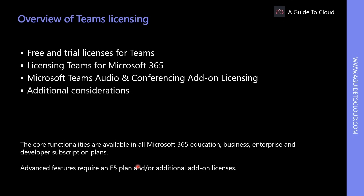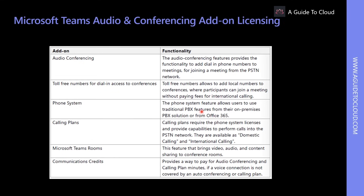Services included in E3 include DLP, Teams naming policy, Teams classification, and Teams creation. E5 licenses are required for information barriers for Teams, audio conferencing, phone system, etc. For audio conferencing, organizations need to buy and assign an audio conferencing license to each user who will set up dial-in meetings. For calling plans, each user needs a Phone System plus a domestic or domestic and international calling plan. Add-on licenses are available for audio conferencing, toll-free numbers, phone system, call-in plans, Teams Rooms, and communication credits.